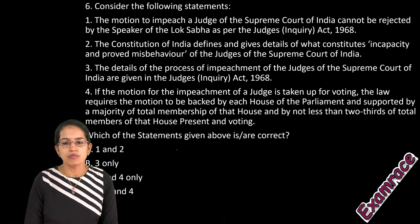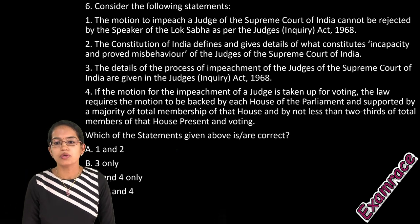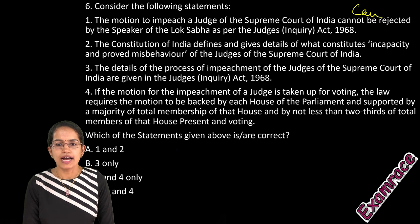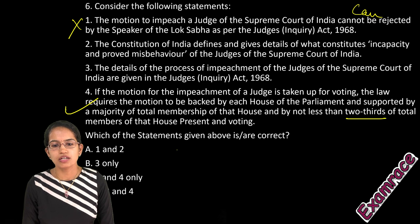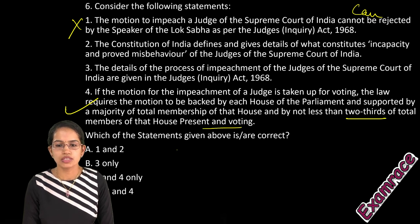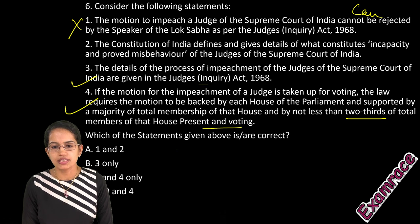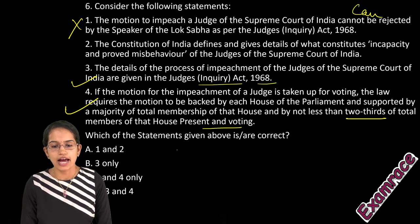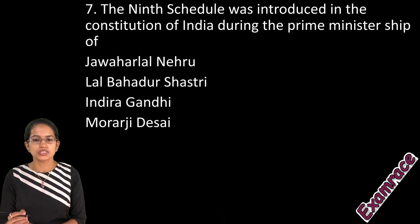The motion to impeach a judge of the Supreme Court cannot be rejected by the Speaker — so that statement is incorrect. The motion must be passed by two-thirds of the members present and voting in both houses. The details of the impeachment process are given in the Judges' Inquiry Act of 1968. So options three and four are the right answers.